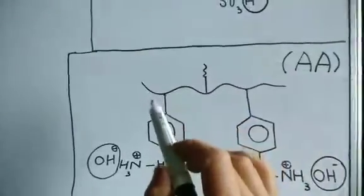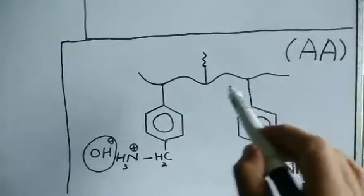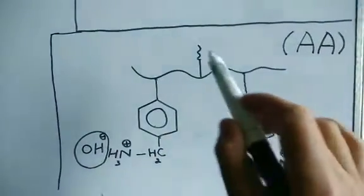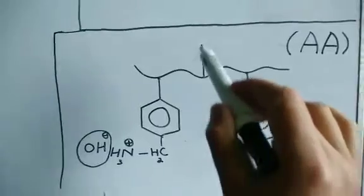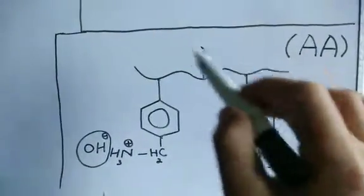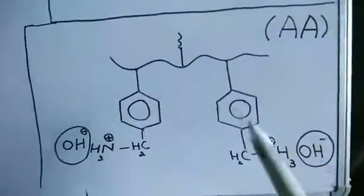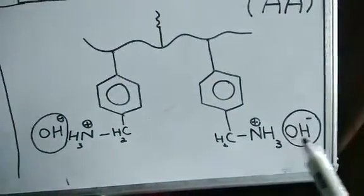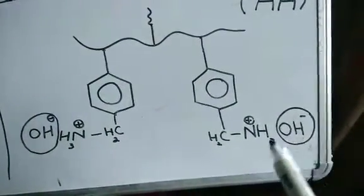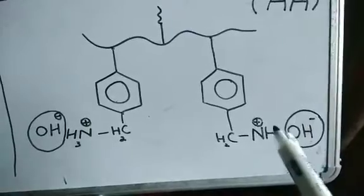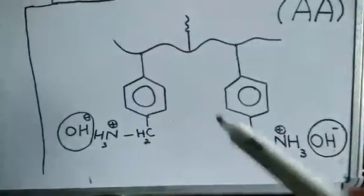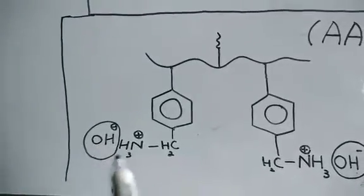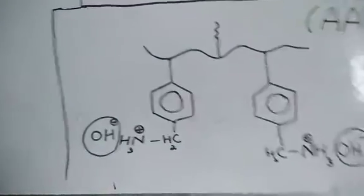Now we move to the anion exchanger. I've shown here a wayward pattern — the extensive framework of –CH–CH–CH2– type bonds with divinylbenzene and styrene units. The active site shown here is an amine group with OH⁻ ions, which can be exchanged with anions like chloride, bromide, or iodide, as needed. We have two such active sites shown.